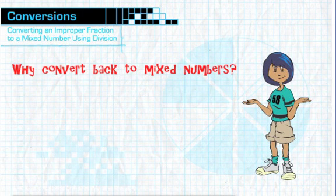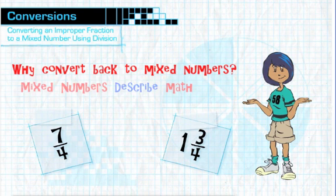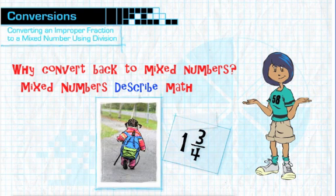Why bother to convert the improper fraction seven-fourths into the mixed number one and three-fourths? Mixed numbers, more times than not, do a better job of describing math. You wouldn't say she walked seven-fourths of a mile. You would say she walked one and three-fourths miles.